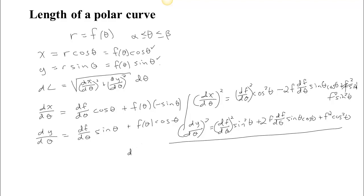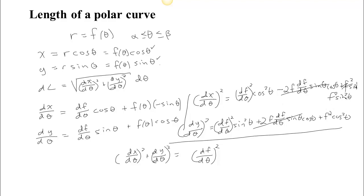Now if you add those up, (dx/dθ)² + (dy/dθ)² equals: we have (df/dθ)² — one time it's times cos²θ and the other time it's times sin²θ — so we factor out (df/dθ)² and get cos²θ + sin²θ, which is 1, giving just (df/dθ)². The middle terms cancel since one's negative and one's positive. Finally, for f²: one time we have f² sin²θ and one time f² cos²θ, so factoring out f² we get sin²θ + cos²θ = 1, leaving just f².